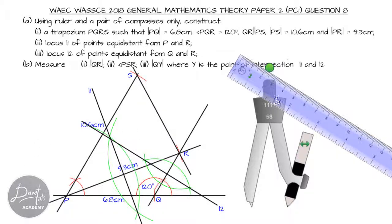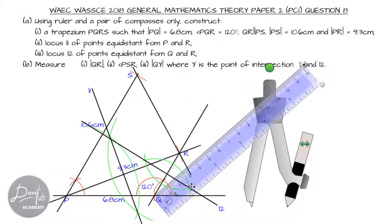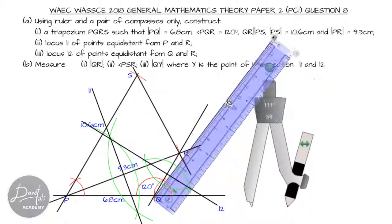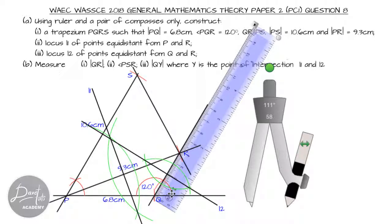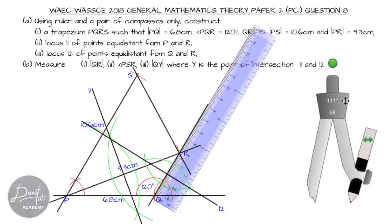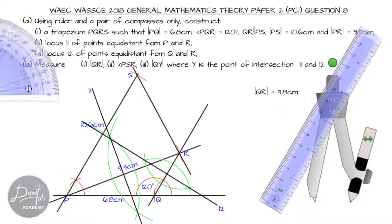Now we need to answer our questions on measurements. We're asked to measure the line QR. Putting in my ruler at point Q, I have zero, and then marking that off: one, two, three. I have my line QR as you can see from the ruler. Line QR is equal to 3.8 centimeters.